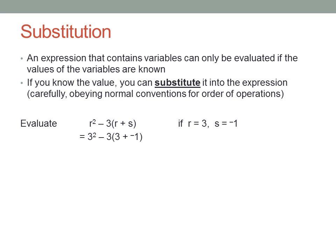So now we have 3² - 3(3 + (-1)). Okay, exponents first. Three squared is nine, and we can actually do the brackets at the same time. Three plus negative one is two. It's the same as three minus one. Nine minus three times two. Do the times. Three times two is six. Then nine minus six is three.